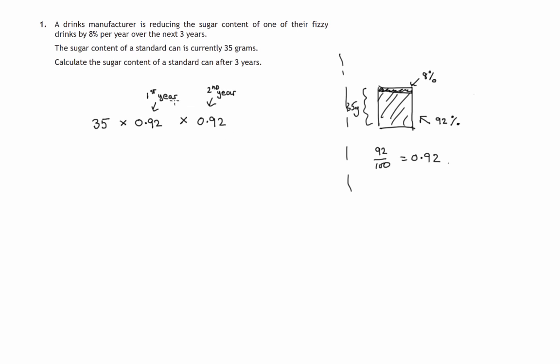Whatever sugar remains now, in the third year, 92% of that will remain. So the calculation is: we take 35 and multiply it by 0.92 times 0.92 times 0.92. Well, that's 0.92 cubed. That's the short calculation we'll do.